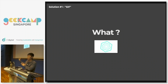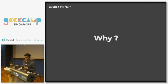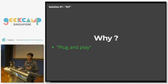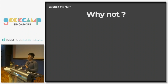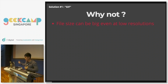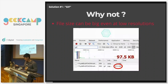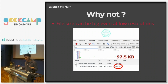This is what you will get if you're using a GIF. Why would you want to use a GIF? It's very simple — if you have created it, you host it somewhere, it's plug and play. But why would you not want to use it? One of the issues is that the file size can get really big, even at low resolutions. When I look at my network tab, that GIF I showed you costs around 97.5 kilobytes.